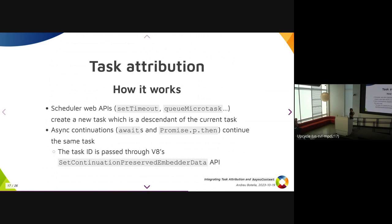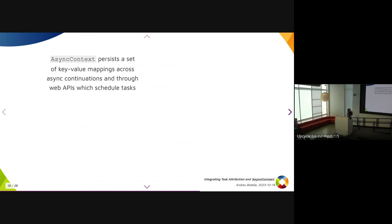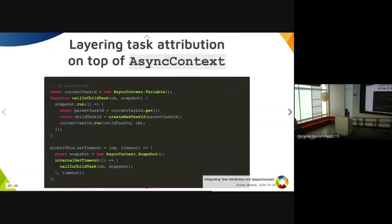Continuations — any await and any promise.then — continue the same task. This is tracked via setContinuationPreservedEmbedderData, which sets the current task API, and V8 handles the async continuation by itself. As a recap: async context persists key-value mappings across async continuations and through Web API scheduled tasks. Task attribution tracks the provenance of tasks in the event loop by tracking async continuations as well as Web APIs with scheduled tasks. They're the same picture, so they could be layered one on top of the other.